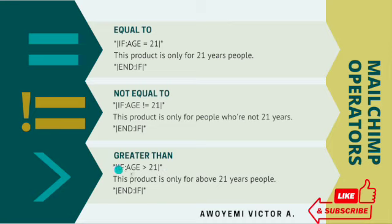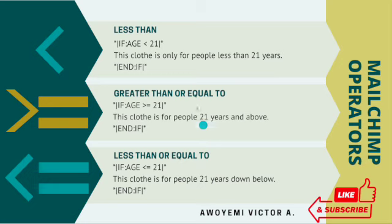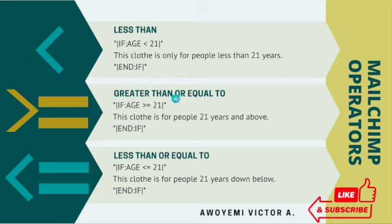The third operator is the greater than operator, which applies for any customers or subscribers whose age is greater than 21 — they are going to receive this message: 'This product is only for above 21 years people.' The next operator is the less than operator — only subscribers whose age is less than 21 will receive the message that this offer is only for people less than 21 years.